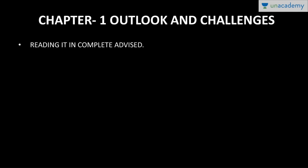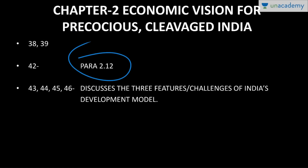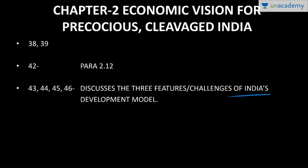Chapter two is 'Economic Vision for Precocious Cleavage in India.' Read the introduction, then page number 42, paragraph 2.12, which deals with the road to be traversed. Pages 43 to 46 basically discuss the three features or three major challenges of India's developmental model. These are the pages you are supposed to read from chapter two.